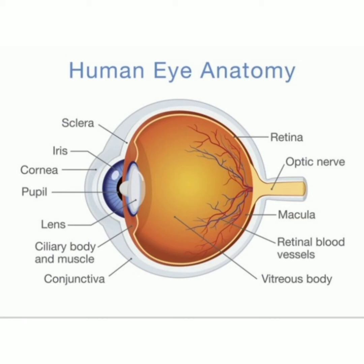The eyeball is rounded, so the cornea acts as a lens — it bends or refracts light. The aqueous humor is the fluid beneath the cornea, and it has a composition similar to that of blood plasma. It helps to shape the cornea.